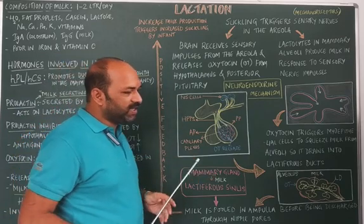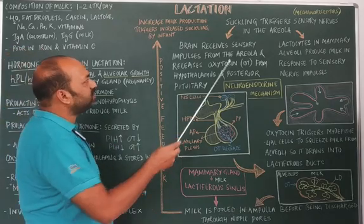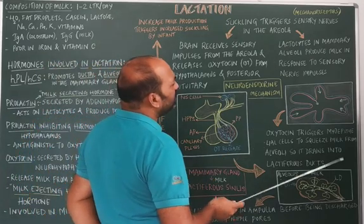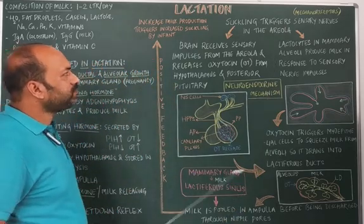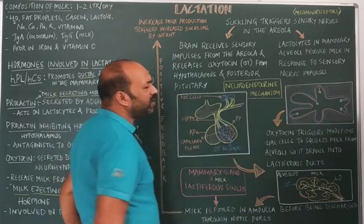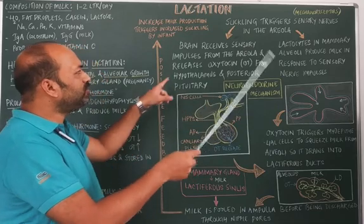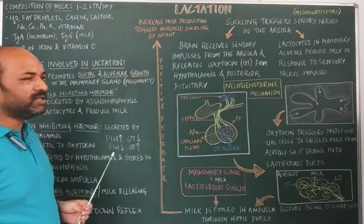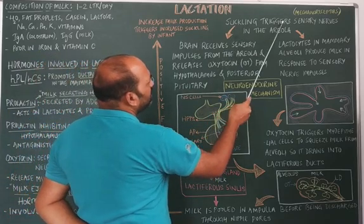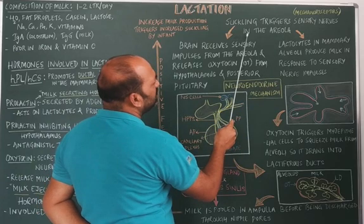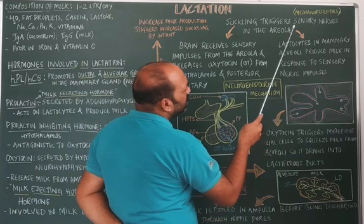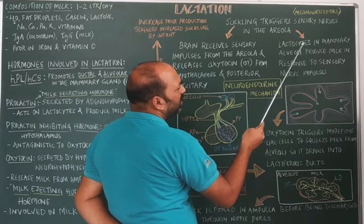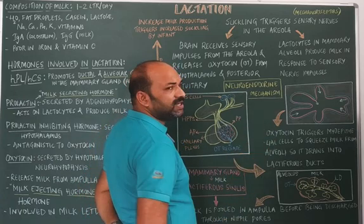Now let's discuss the physiology of lactation. When the suckling sucks the nipple, the nipple contains receptors called mechanoreceptors which trigger sensory nerves present in the areola. Two changes occur: one in the mammary gland and one in the pituitary of the mother. In the mammary gland, the lactocytes in the mammary alveoli start producing milk in response to the sensory nerve impulses.